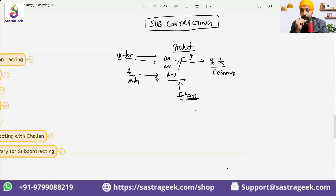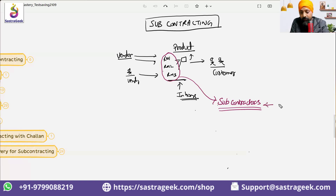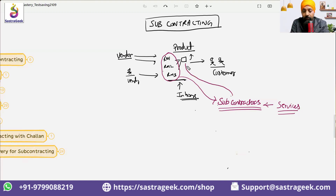We identify a subcontractor to whom we give these raw materials. They add their services — they manufacture it, converting the raw materials into semi-finished or finished goods, and give the product back to us. Then this product will be sold to the customer. That is the subcontracting process.